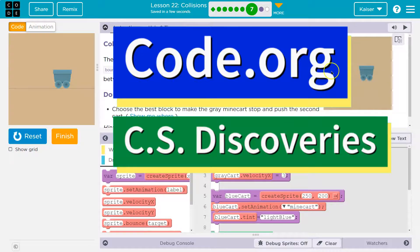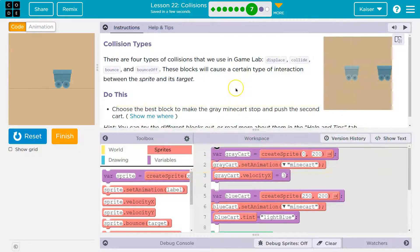This is Code.org. Let's see what we're doing - collision types. There are four types of collisions that we use in Game Lab: displace, collide, bounce, and bounce off. These blocks will cause a certain type of interaction between the sprite and its target.